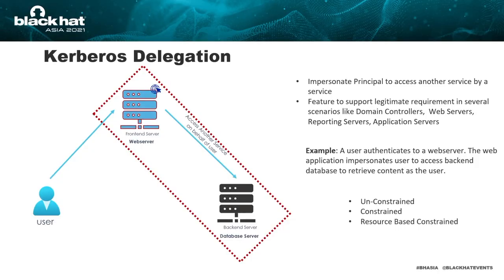Each hunt is structured in three parts: the hypothesis, how attackers implement the backdoor or exploit the system, and how defenders can detect those TTPs and hunt for attacker techniques in their environment. The first technique is delegation misuse for persistence. Before discussing how attackers misuse delegation, let's understand what delegation is. Kerberos delegation is a feature of Active Directory used extensively in multi-tier application service environments. There are three forms of delegation: unconstrained delegation, constrained delegation, and resource-based constrained delegation, or RBCD.